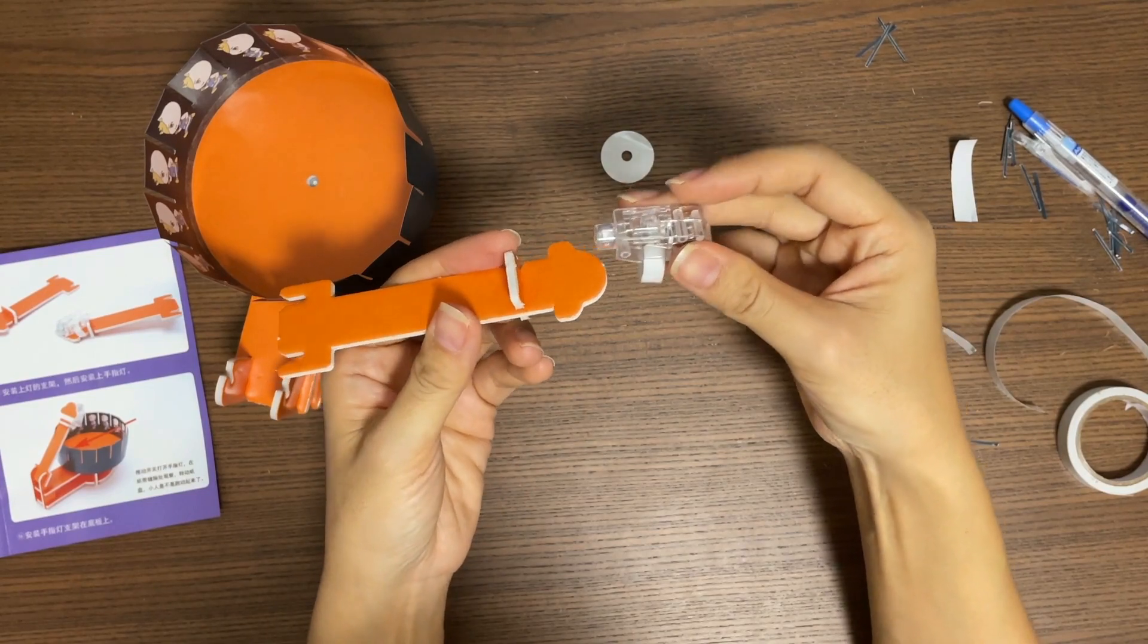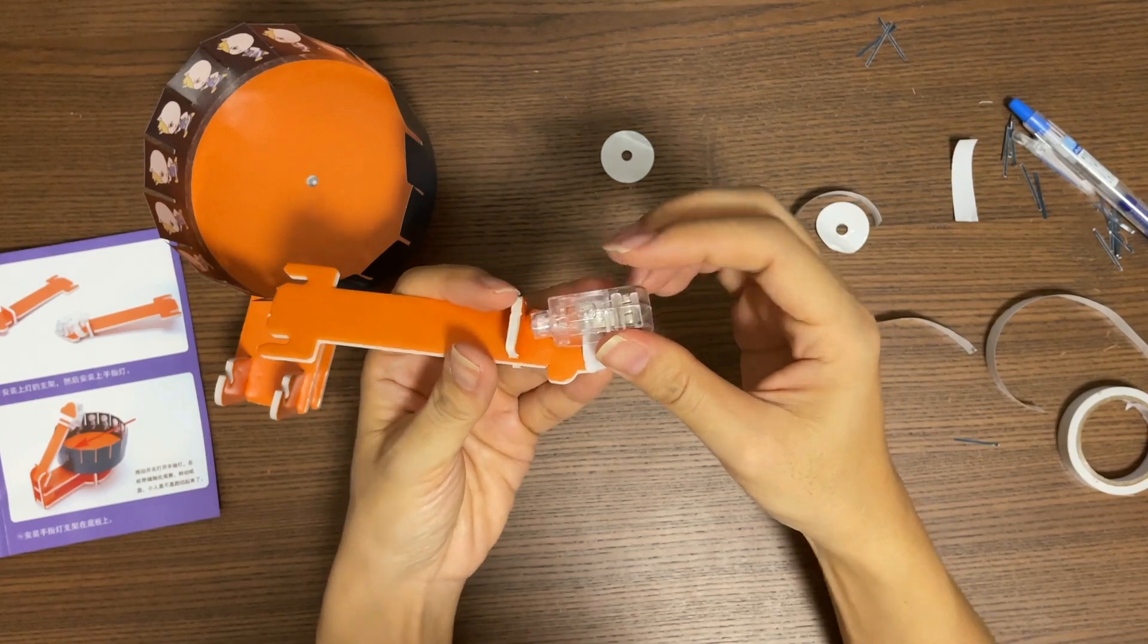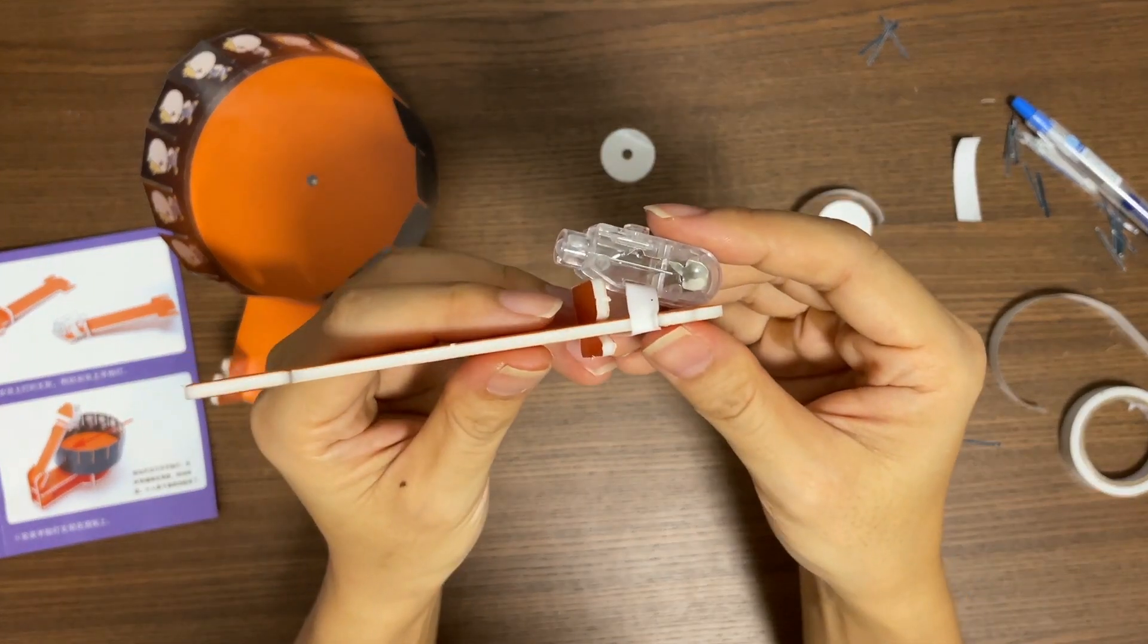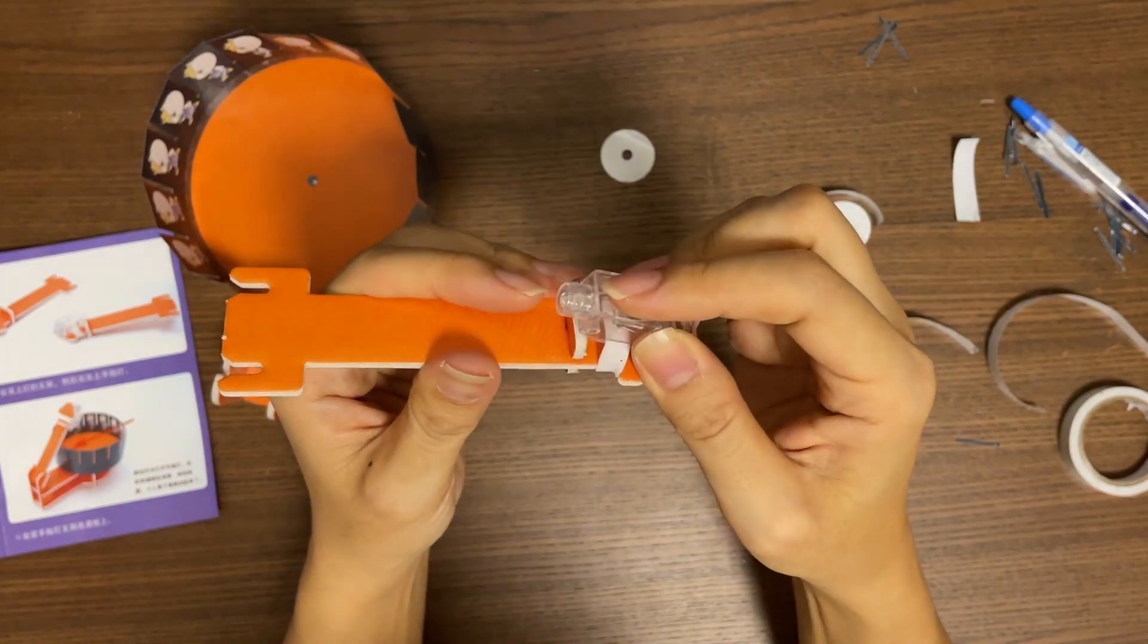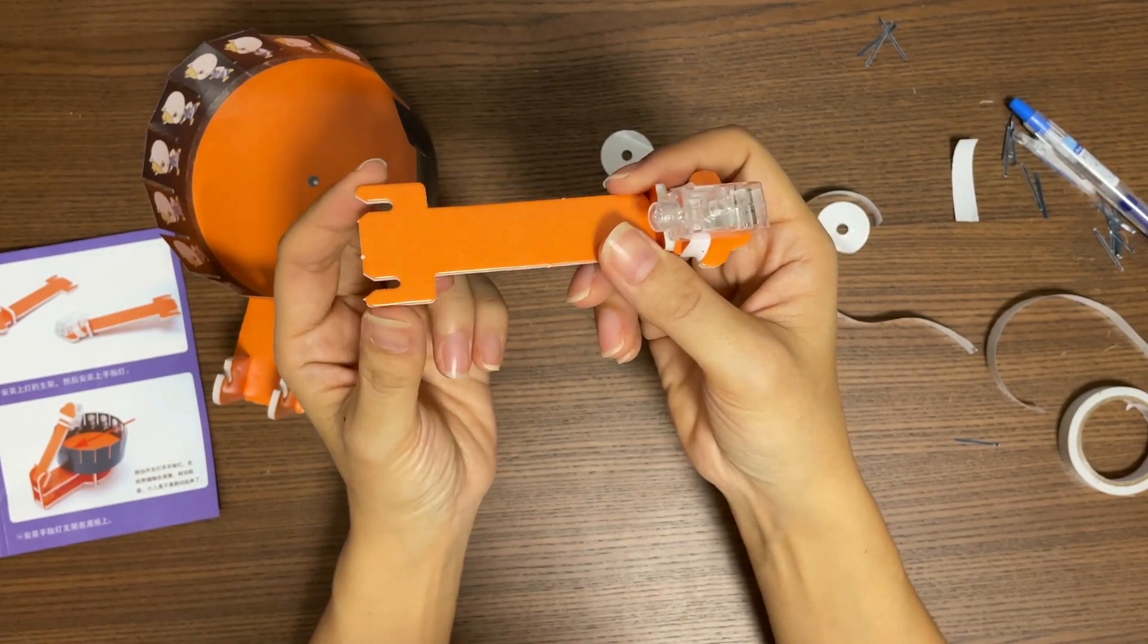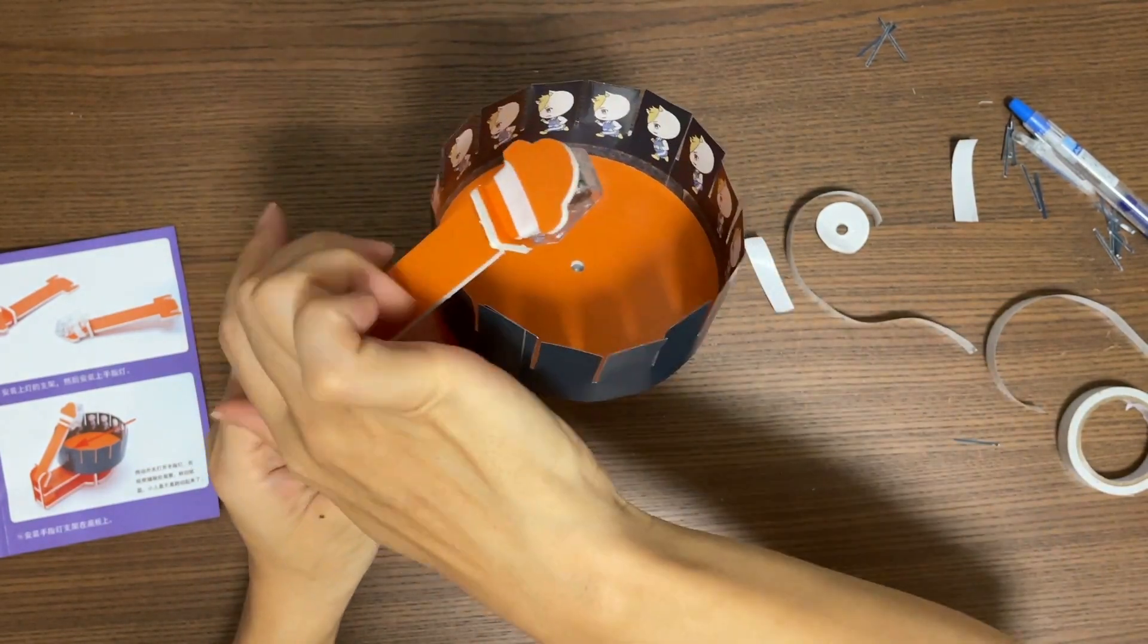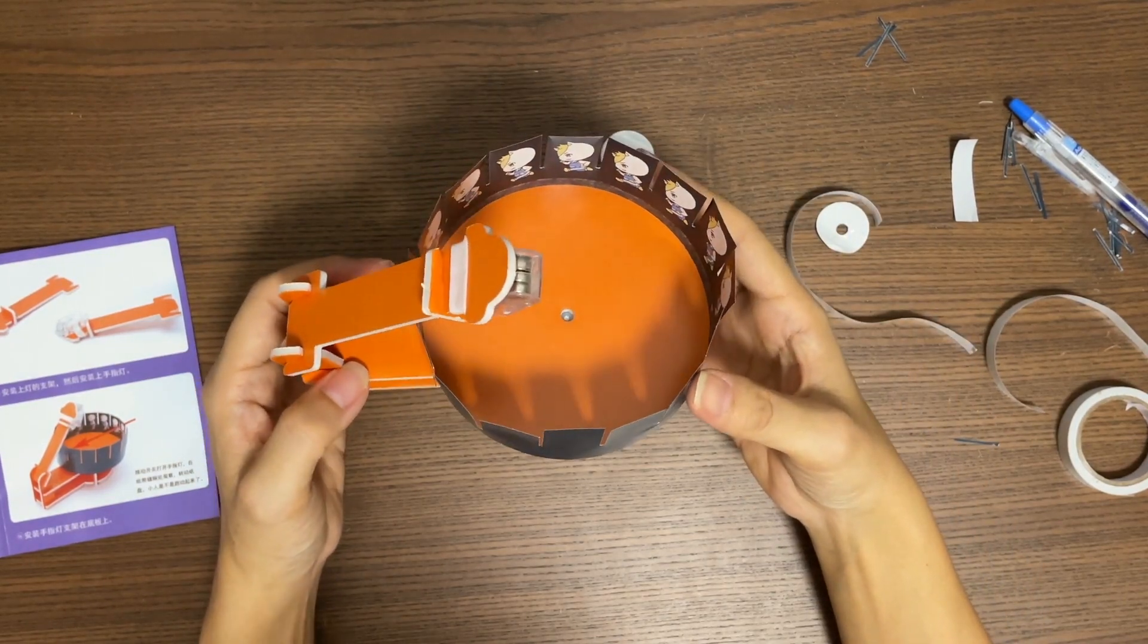Next, fix the light to the handle. Make sure that the light is pointing to the correct direction. Then fix the handle onto the base. Make sure the light is pointing downwards.